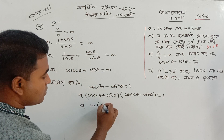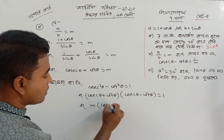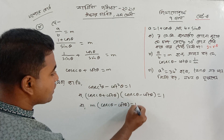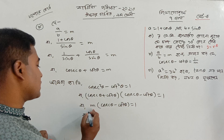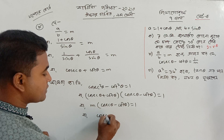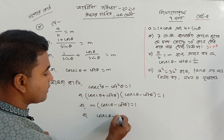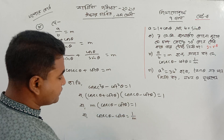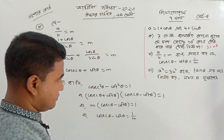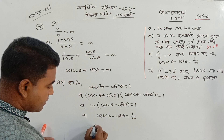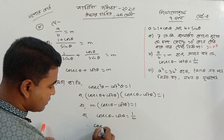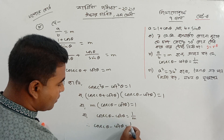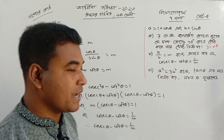m into cosec theta minus 4 theta equal to 1 by m.